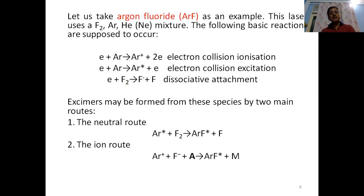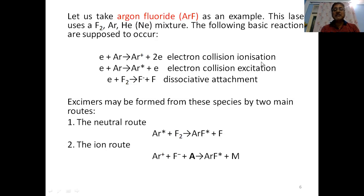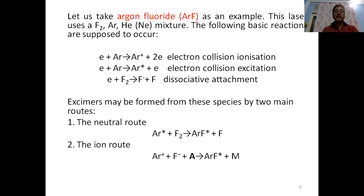The argon fluoride laser uses fluorine, argon, and helium or neon mixture. The following reactions take place: an electron makes an ionizing collision with argon, ionizing it to produce two electrons — one electron is removed from the argon. Another electron collides with argon without removing an electron but transfers its energy, making argon excited. This electron then makes a collision with fluorine to give fluorine negative — this is dissociative attachment.